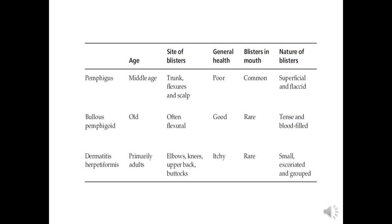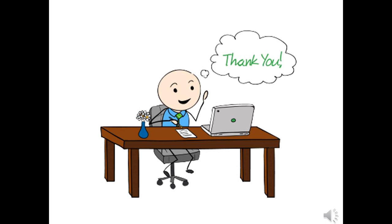In summary, the main three diseases within the immunobullous skin disorders — pemphigus vulgaris, bullous pemphigoid, and dermatitis herpetiformis — are compared in a table covering age of incidence, size of blisters, general health, presence of oral or mucosal lesions, and the nature of the blister, which depends on the level of the split between cells where blister formation occurs. Thank you very much for listening, and I wish you all success.